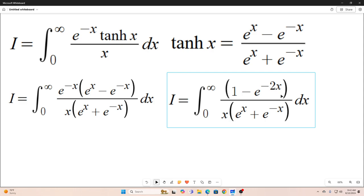Next, we're just going to perform some simplification here. I distributed that e to the negative x in the numerator inside the parentheses there. That's all I did there.